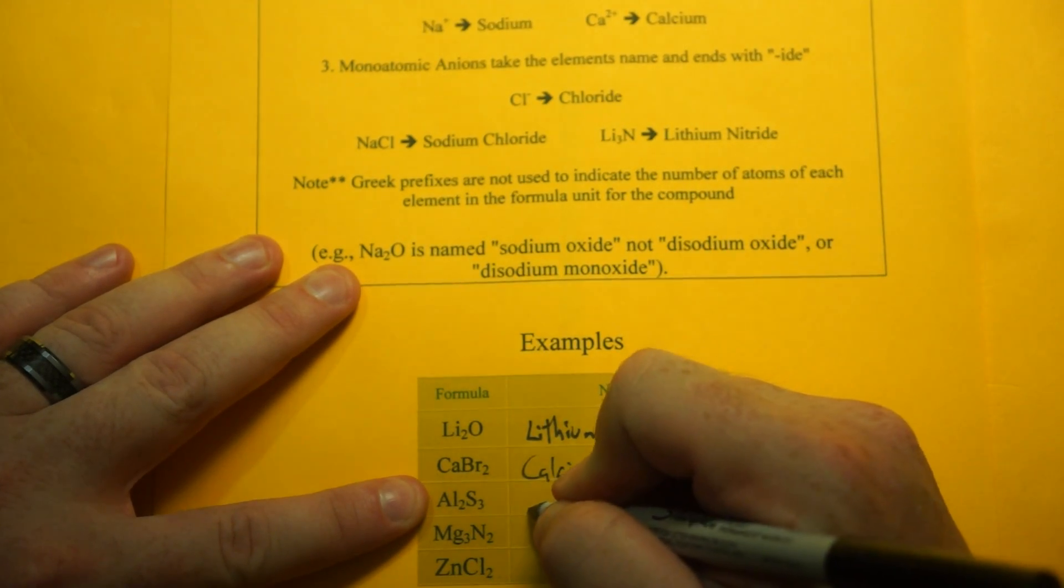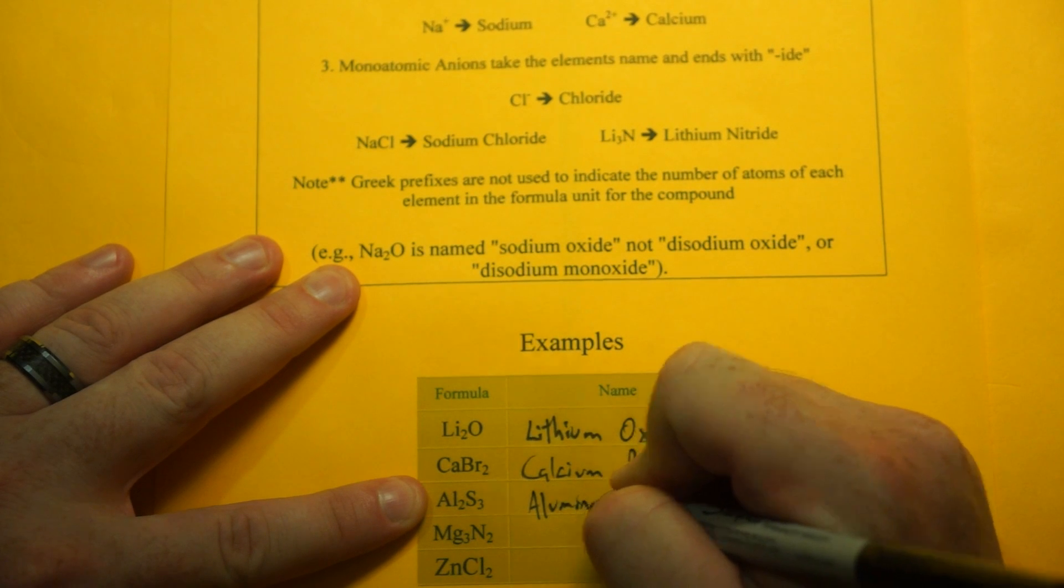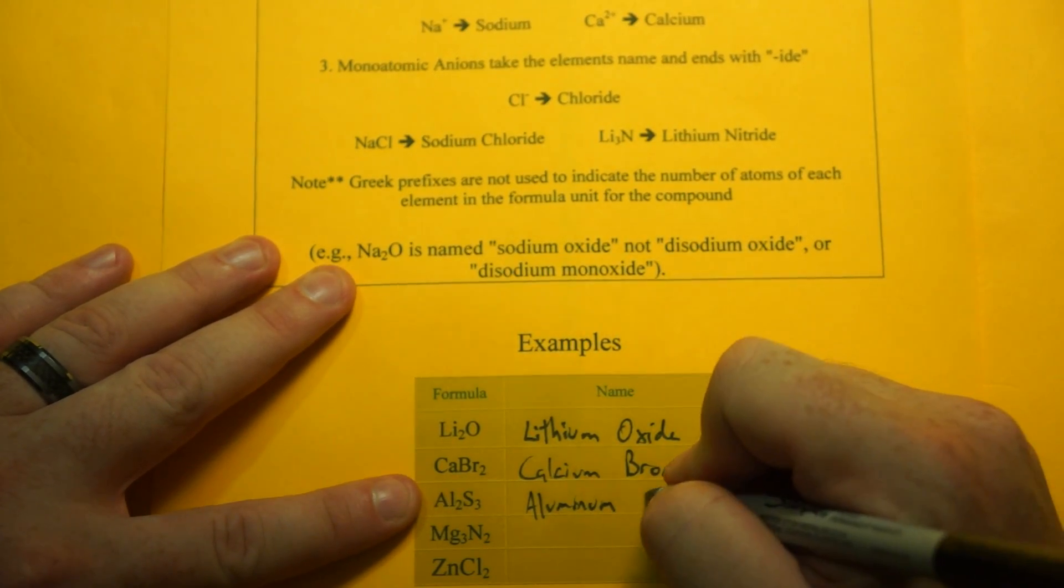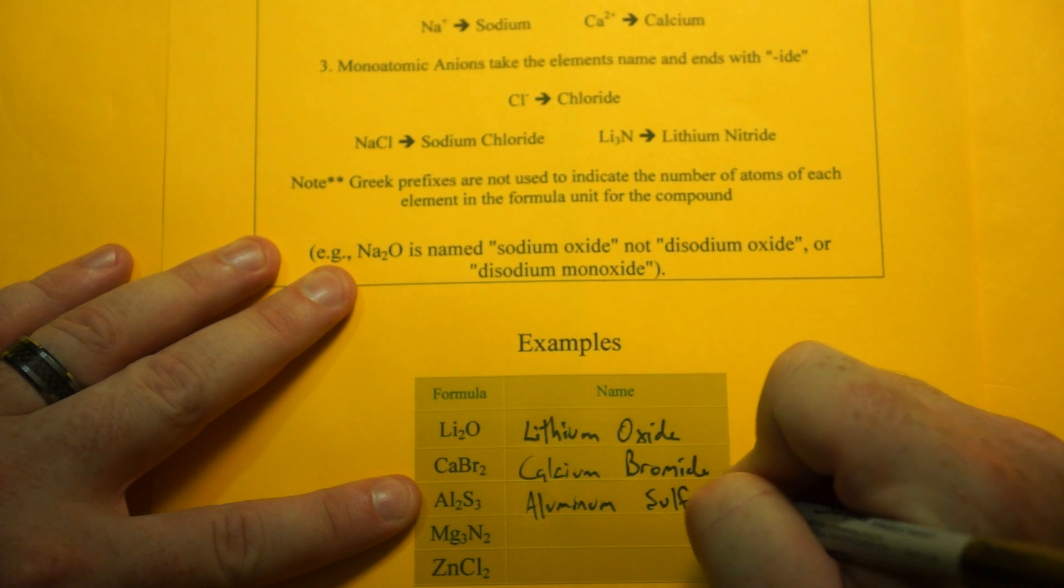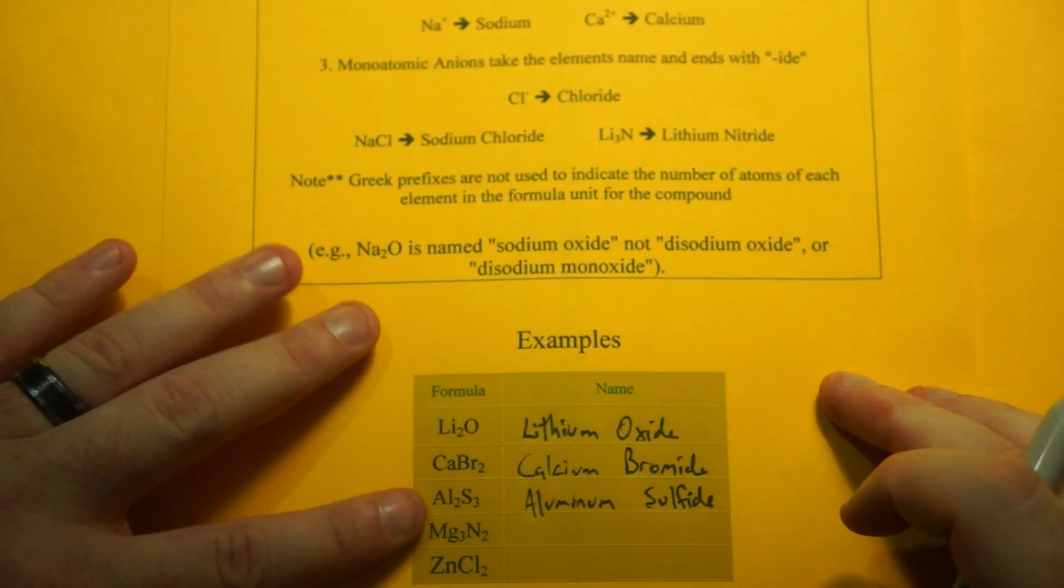Al2S3, the Al is the positive ion, so we're just going to name that aluminum. And S is sulfur, and that turns into sulfide. Sometimes you've got to say it a few times in your head to get it.